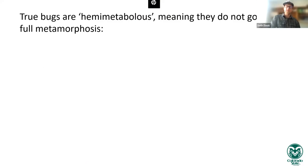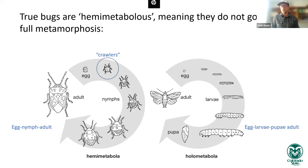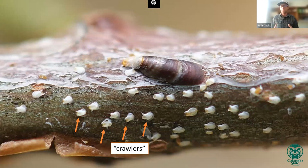True bugs, including scales and hemipterans, are hemimetabolists — they don't go through complete metamorphosis. Scales are born from eggs and go through a series of nymphal instars, growing larger with each successive molt without going through a pupal stage. Scales have a number of larval instars, differing between males and females. The first stage to discuss is the crawler stage — the first nymphal stage after hatching — which is the primary time that scales are dispersing on the body of their host plant.